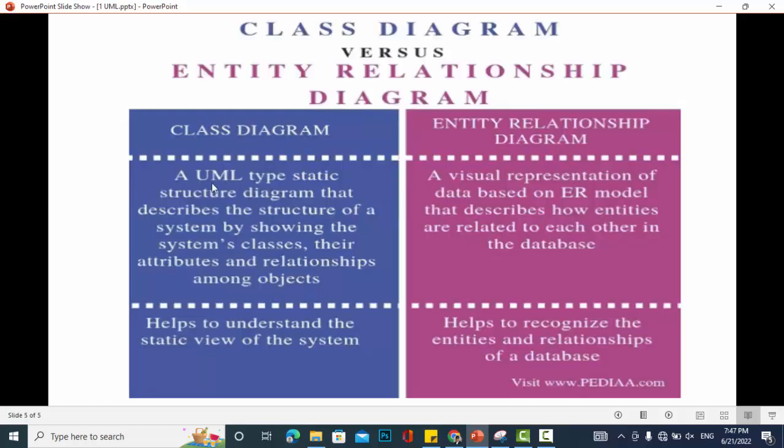A class diagram is a UML type static structure diagram. It is static and describes the structure of a system by showing the system's classes, the attributes, and relationships among objects.